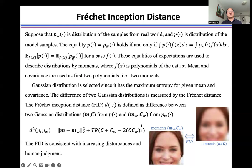These equalities of expectations are used to describe distributions by moments, where F is the polynomials of the data. Mean and covariance are used as the first two polynomials, namely two moments.